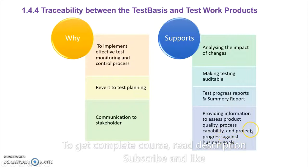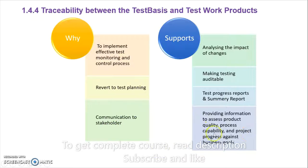Traceability also helps in providing information about quality, process capability, and the project against business goals. If we have defined a goal to be completed by a certain date, traceability will help us reach that goal by showing how many requirements have been covered and how many are still pending. The traceability matrix is really helpful in finding out the coverage of your requirements.